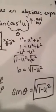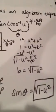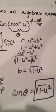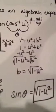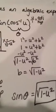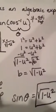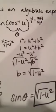1 squared equals u squared plus b squared, because you're trying to find b. So you get 1 equals u squared plus b squared. Minus u squared to get b by itself, and you get 1 minus u squared equals b squared. Then square root each side.